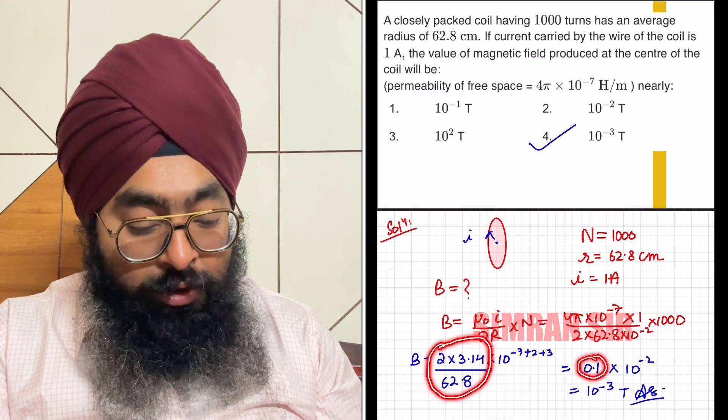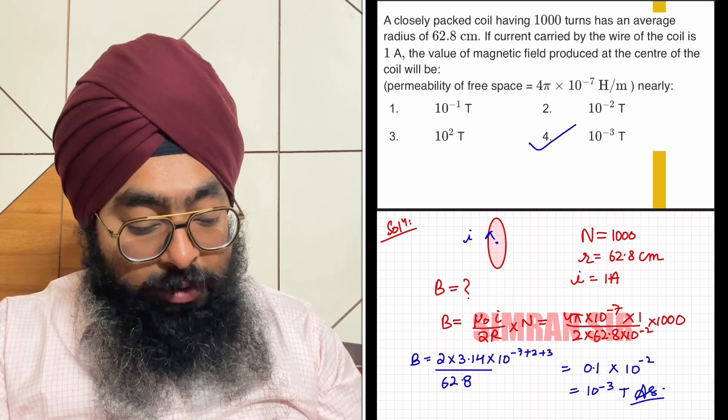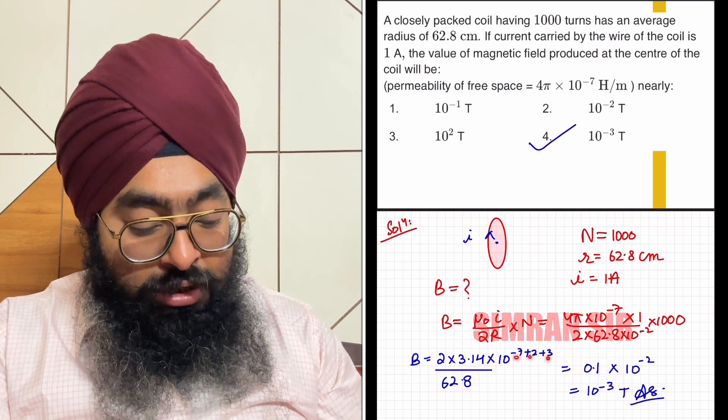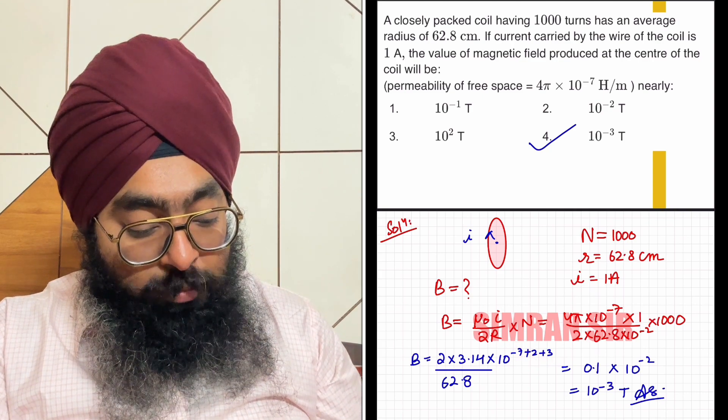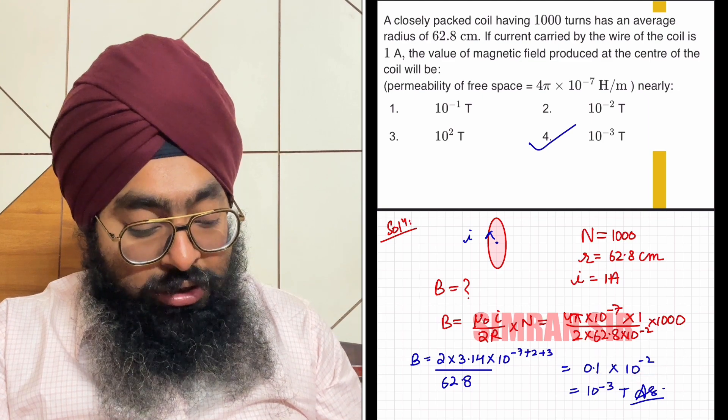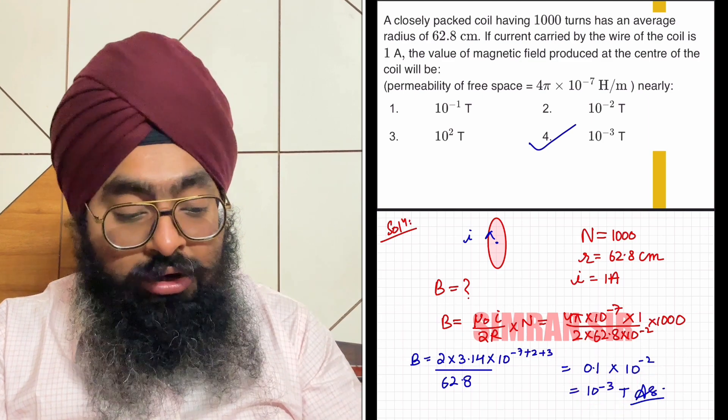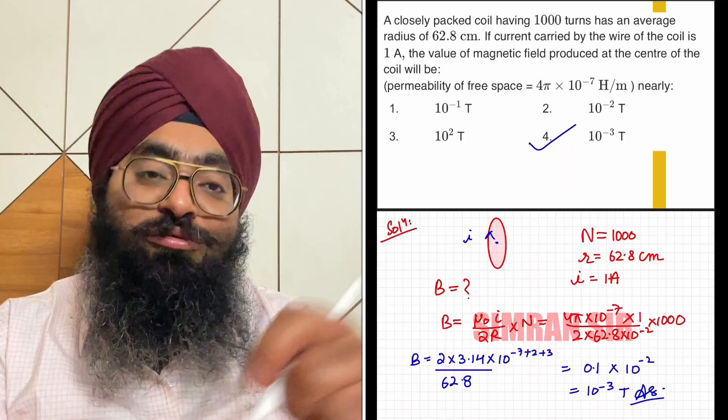When we solve this, we get 0.1, and here we have 10 to the power -7+2+3. So 3+2 is 5, 5-7 gives us -2. So 0.1×10⁻² equals 10⁻³ tesla, and this will be the answer for this question. Thank you for watching.